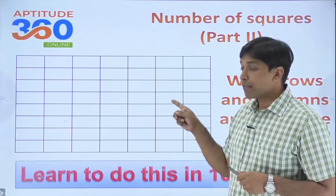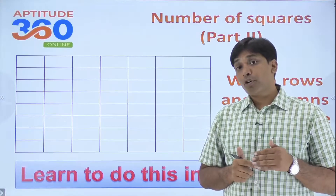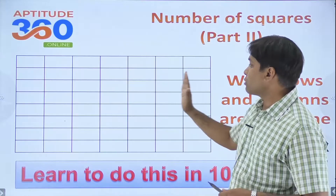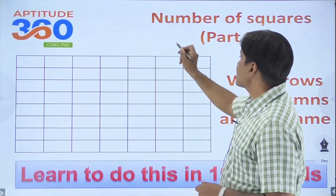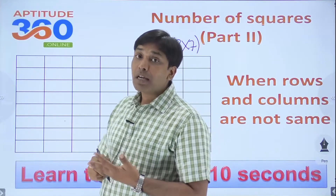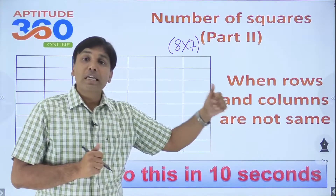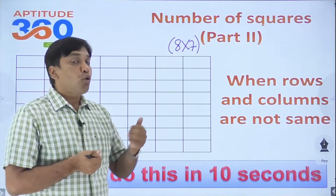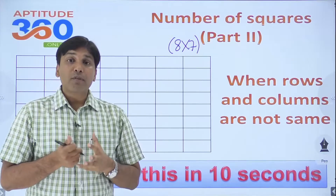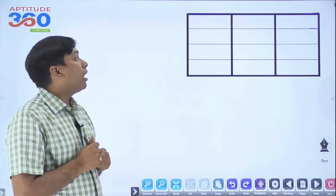Hello everybody — can you find out the number of squares in this figure in 10 seconds? This is the video you should be watching. Here we cover the special case when the number of rows and number of columns are not the same. We have 1-2-3-4-5-6-7-8 rows and 1-2-3-4-5-6-7 columns, making this an 8×7 figure. We are going to find out the number of squares when rows and columns are not the same. I recommend you first watch Part 1 of this series, where we found squares when rows and columns were equal.